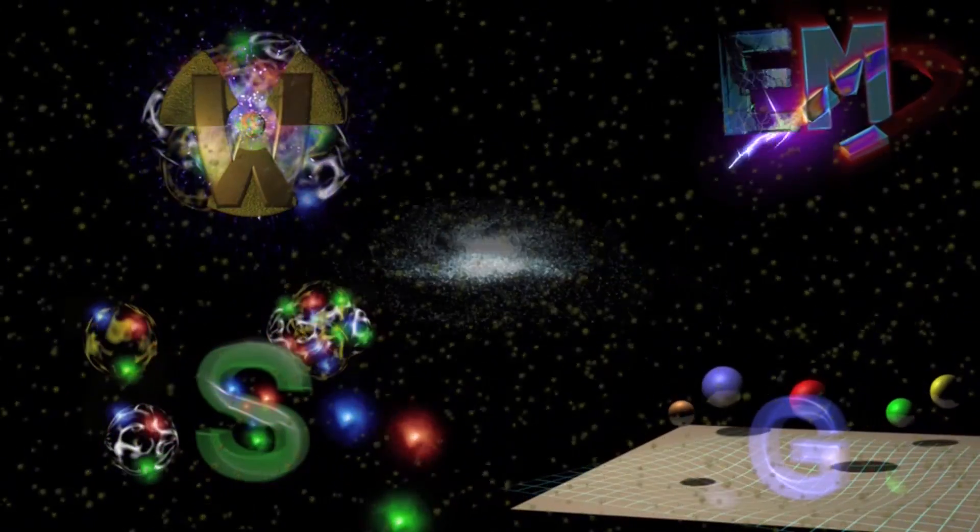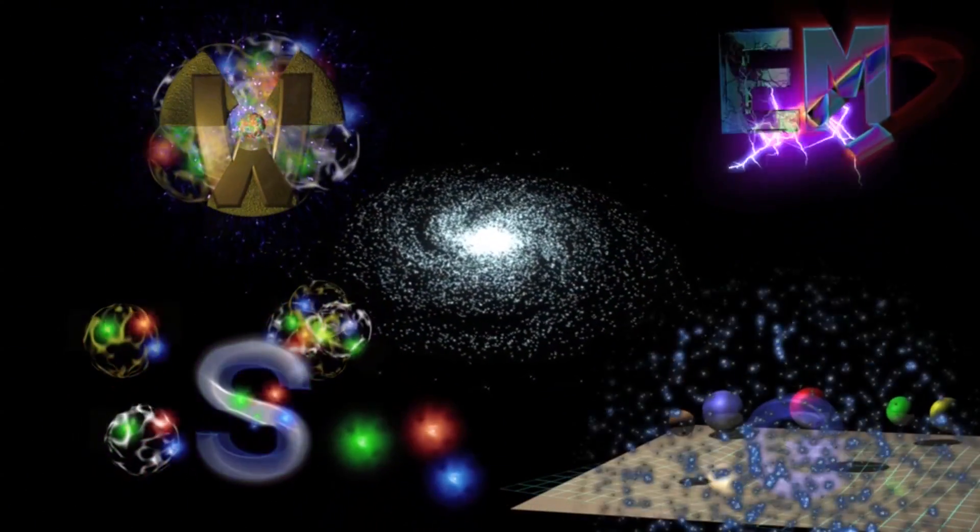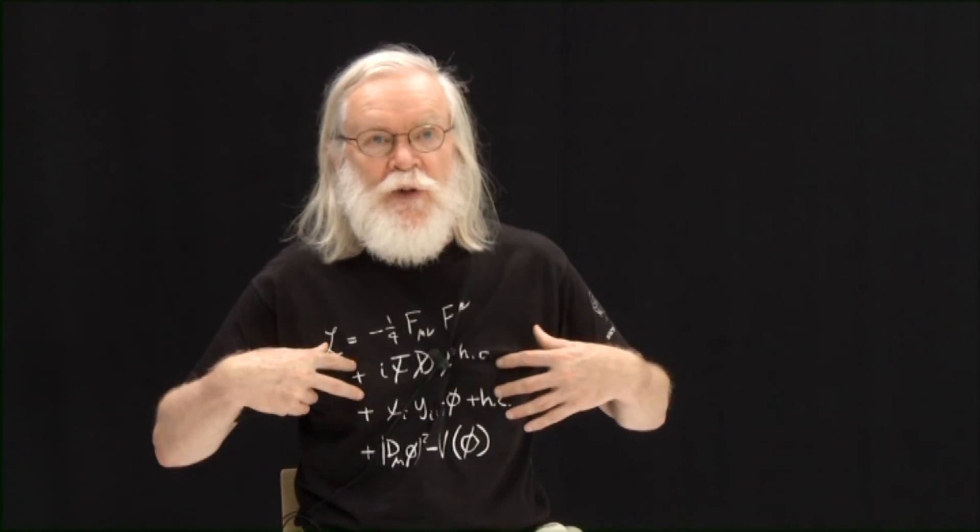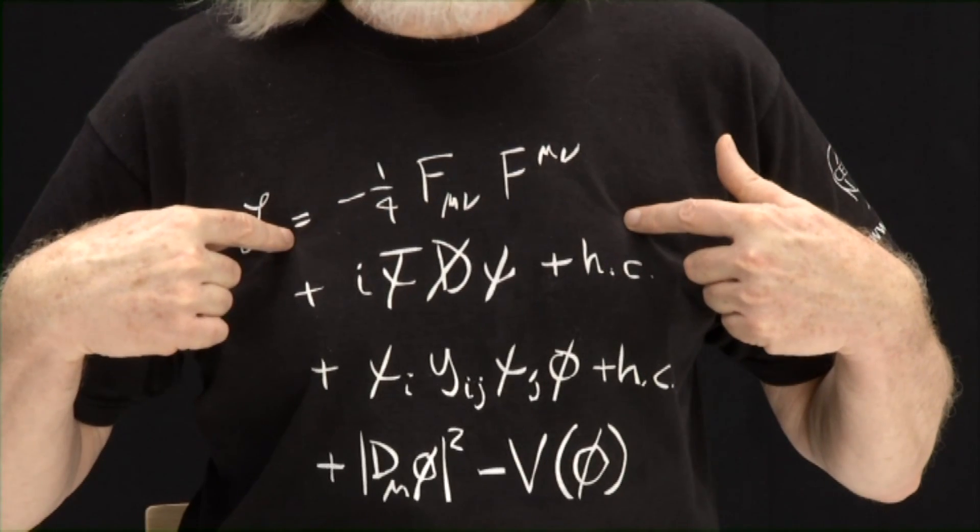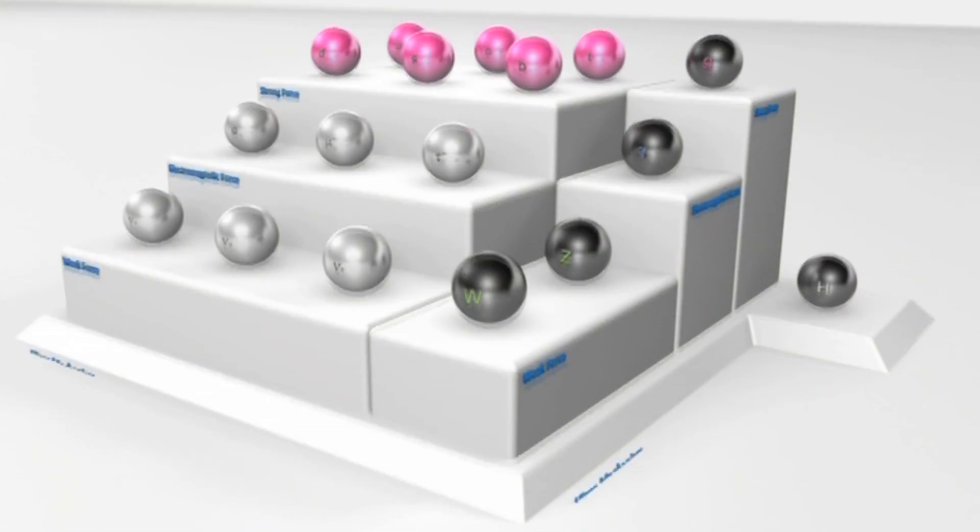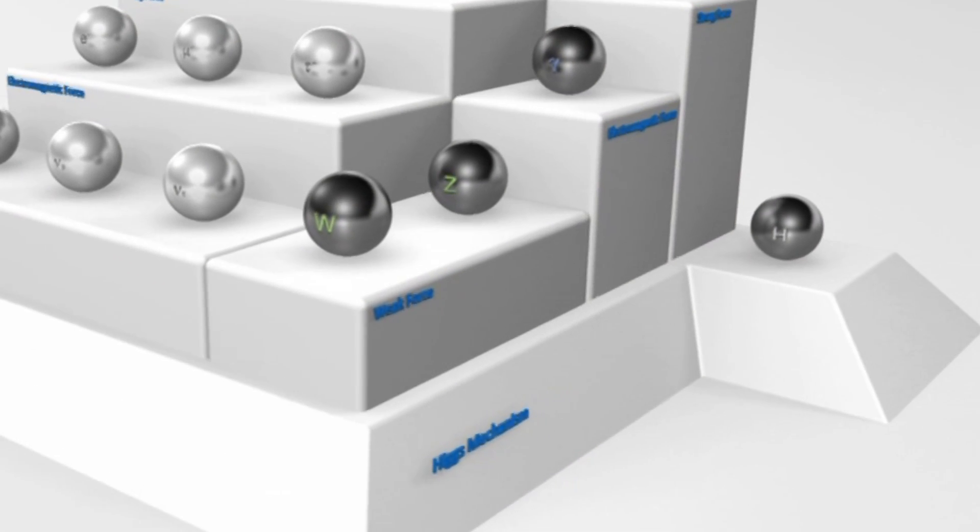But this symmetry has to be broken. Electrons are lighter than muons. The top quark is much heavier than the quarks that make up everyday nuclei. So the top two lines, the symmetric lines, cannot be all there is. There has to be something to discriminate, distinguish between the different types of particle.